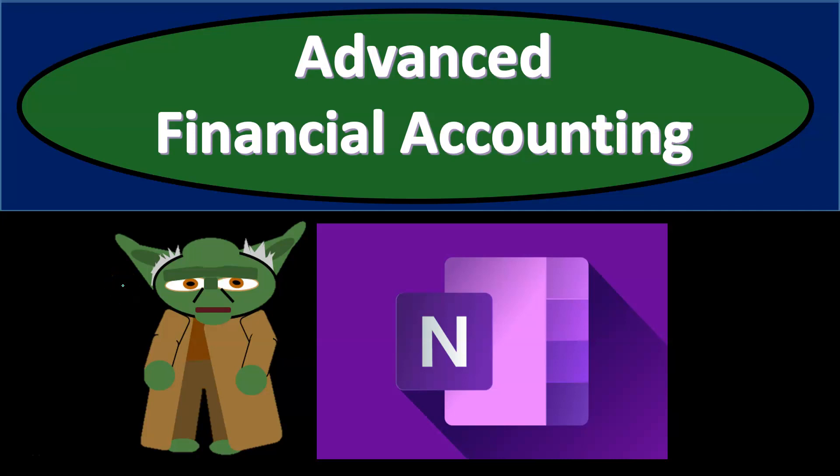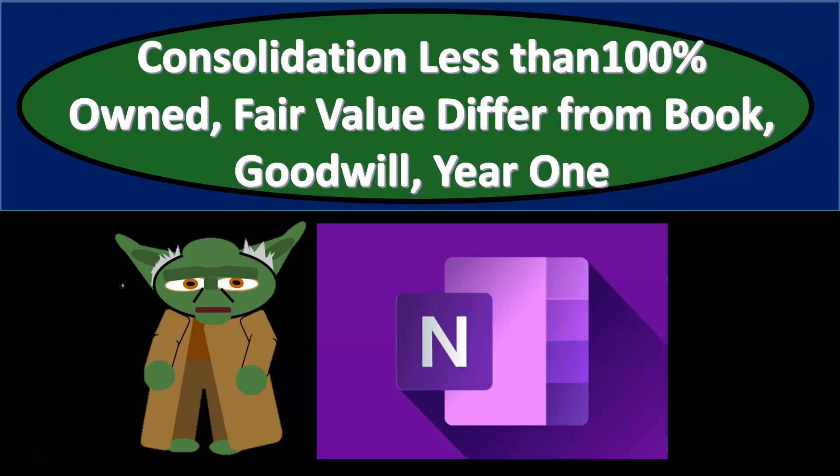Advanced Financial Accounting OneNote Practice Problem. In this presentation, we're going to go through a practice problem in OneNote related to a consolidation in which we have a parent-subsidiary relationship. The parent owns a controlling interest, but less than 100% of the subsidiary. Therefore, we'll have a non-controlling interest we're going to have to deal with. The fair value is going to be different from the book value — we're going to have some assets and liabilities where the fair value is different than the book value at the point in time that the purchase took place. And then we'll also have goodwill, so we'll have to calculate the goodwill. This is going to be as of the end of year one — the purchase takes place at the beginning of the year and we'll do the consolidation a year later. That will allow us to look at the equity method being calculated for basically the whole time period on the books of the parent for their investment in the subsidiary.